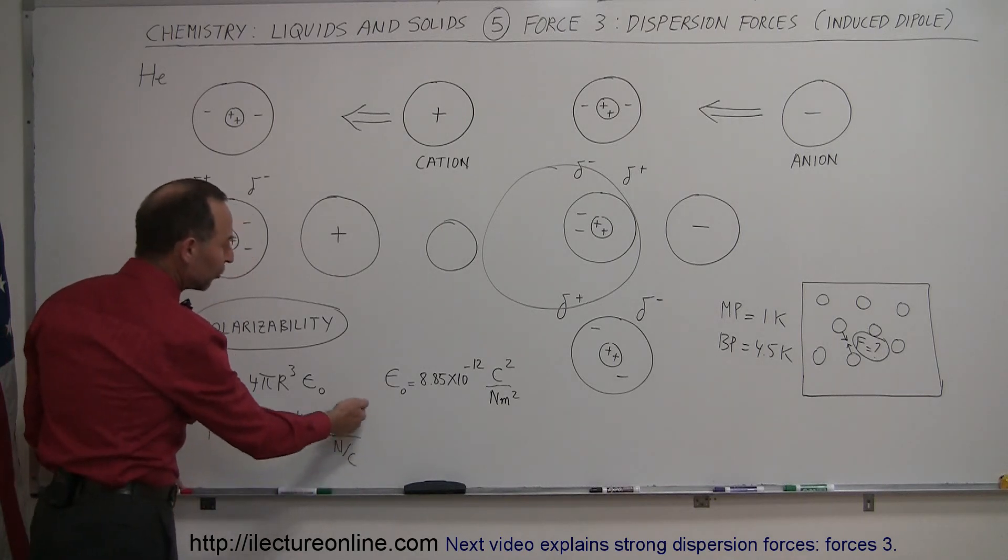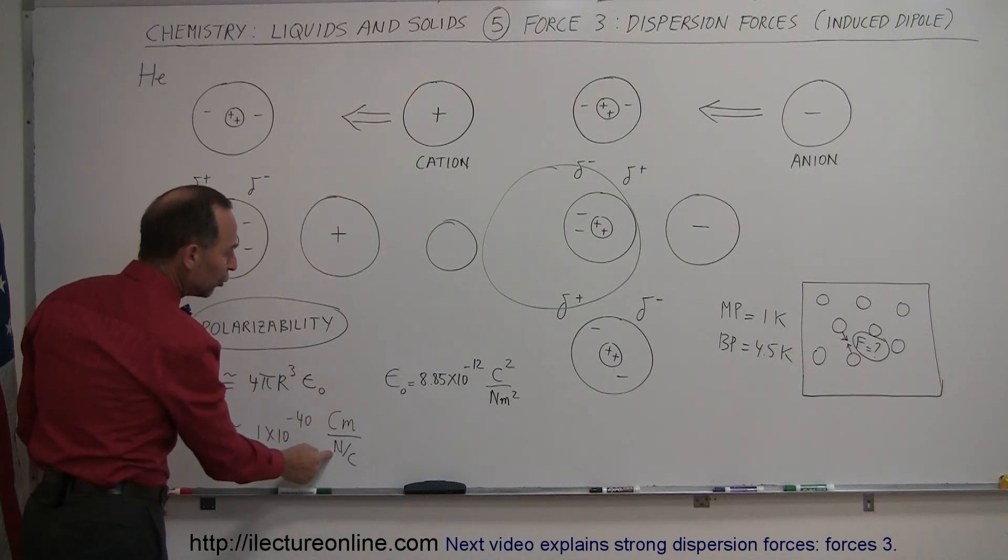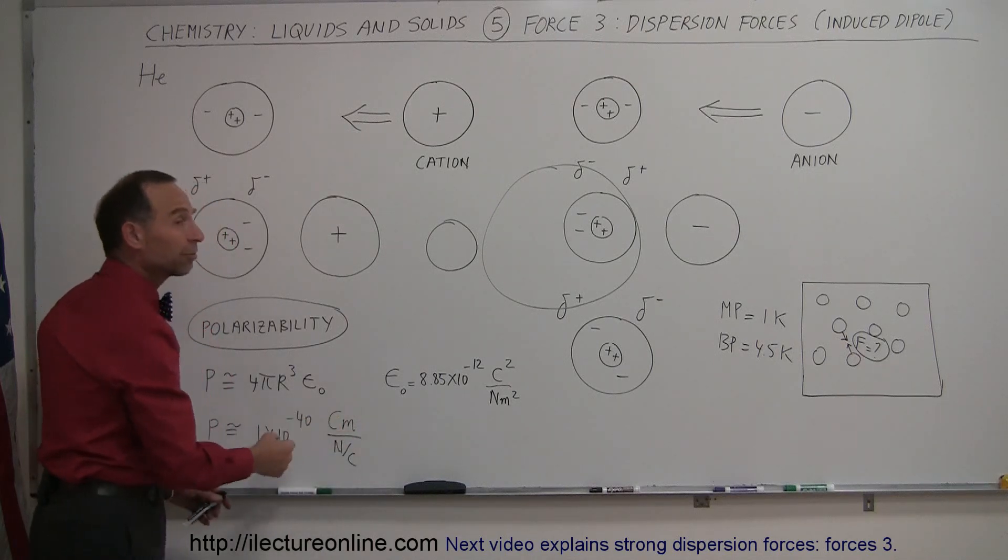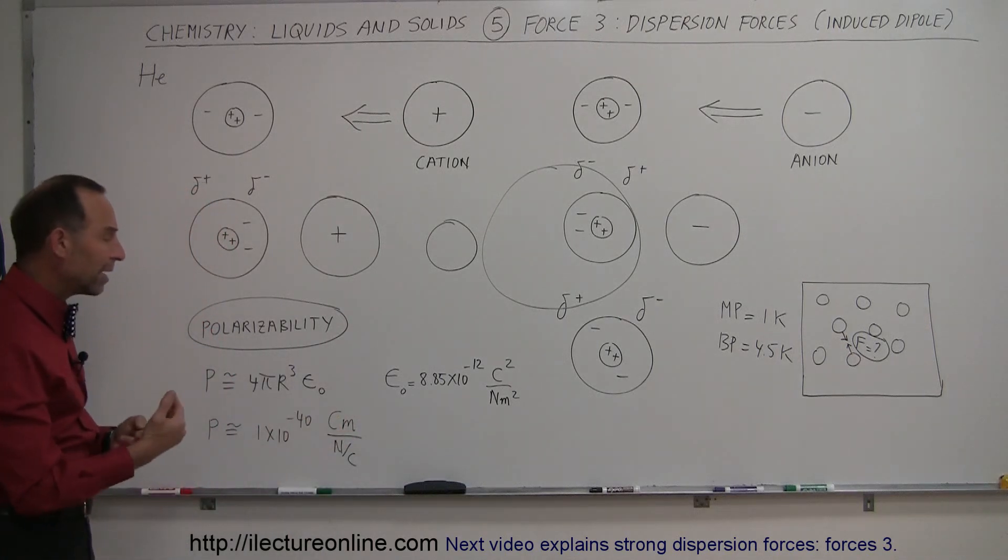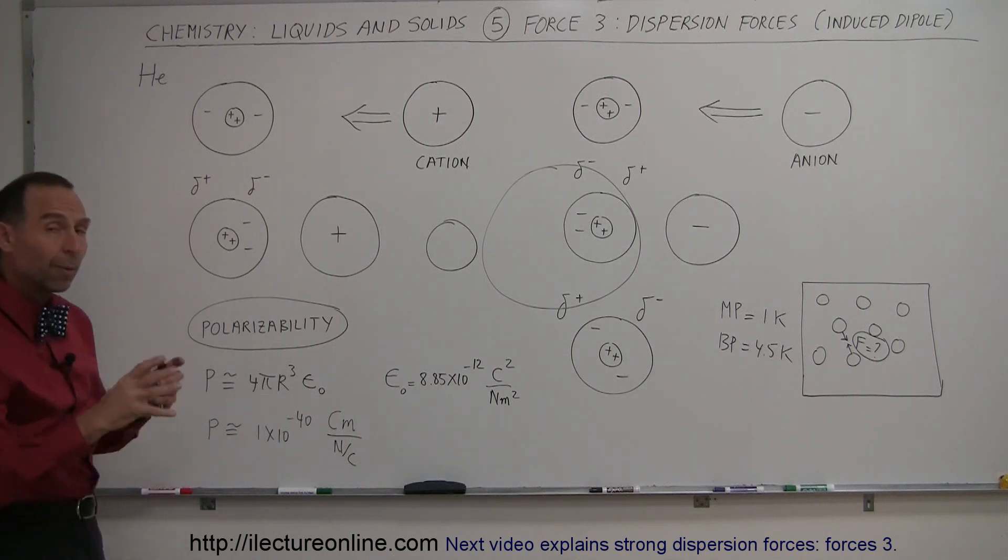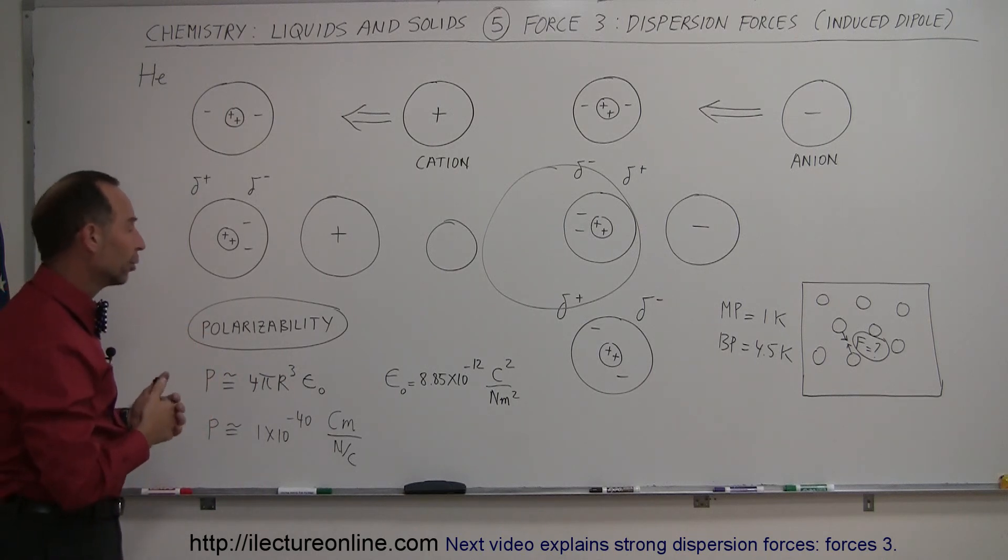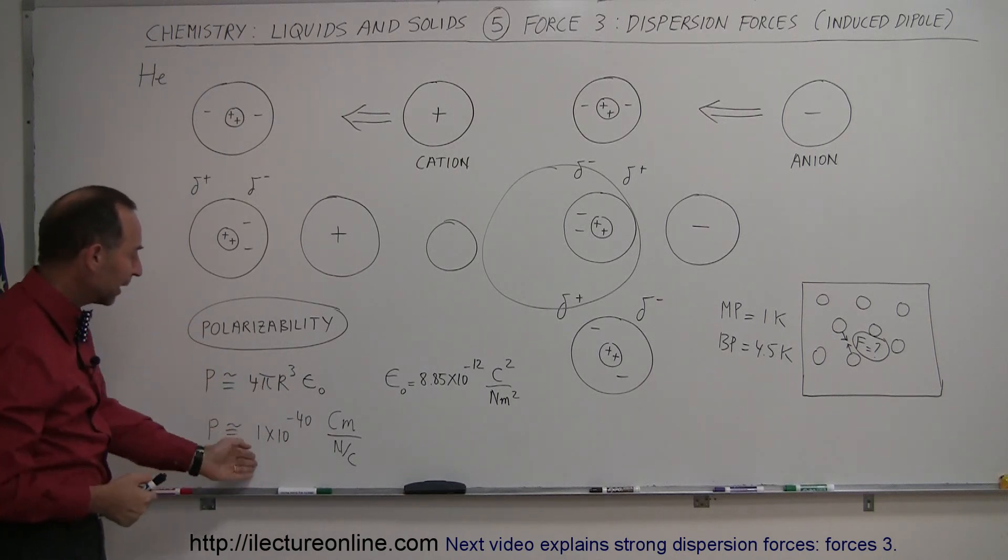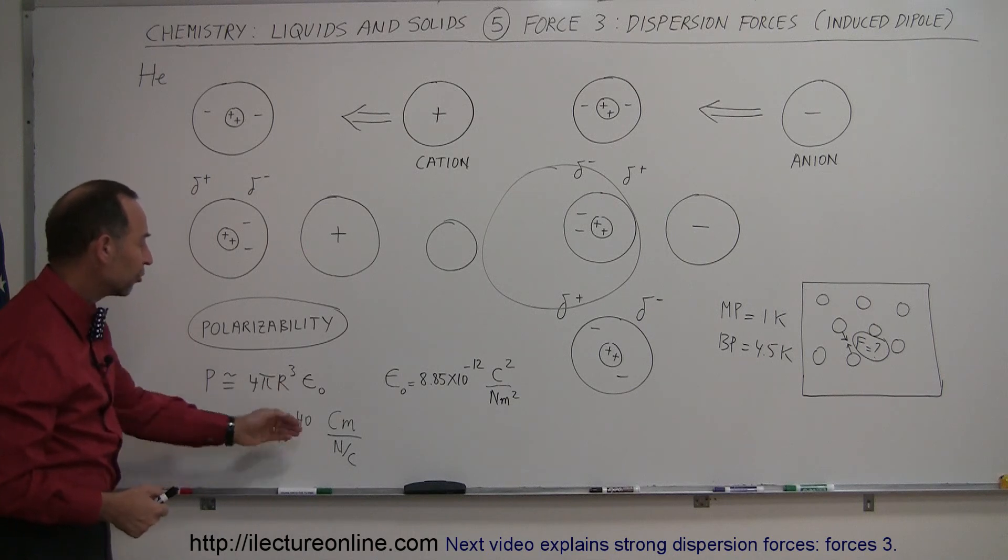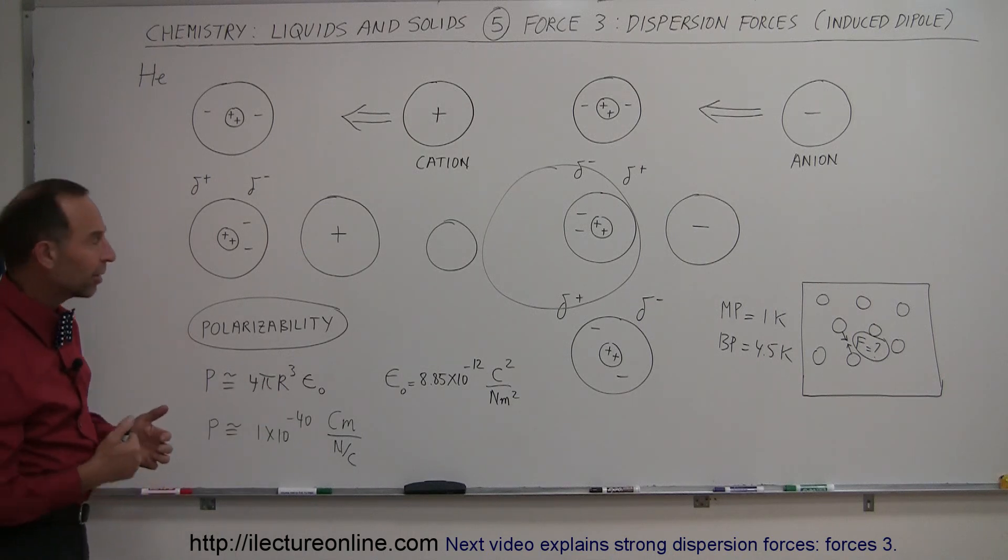Now, coulomb meters is the units of a dipole, and newtons per coulomb is the units of the electric field. So really, the way you can determine the polarizability is to apply an electric field and to see how much of a dipole the atom or the molecule becomes. But typically, numbers are in this range about 1 times 10 to the minus 40.